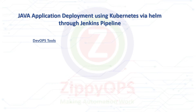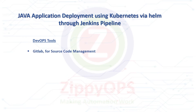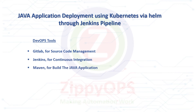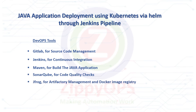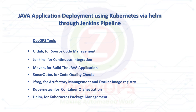The tools which are used in this Java application deployment are: GitLab for source code management, Jenkins for continuous integration, Maven for building the Java application, SonarQube for code quality checks, JFrog for artifactory management and Docker image registry, Kubernetes for container orchestration, Helm for Kubernetes package management, and Docker for containerization.